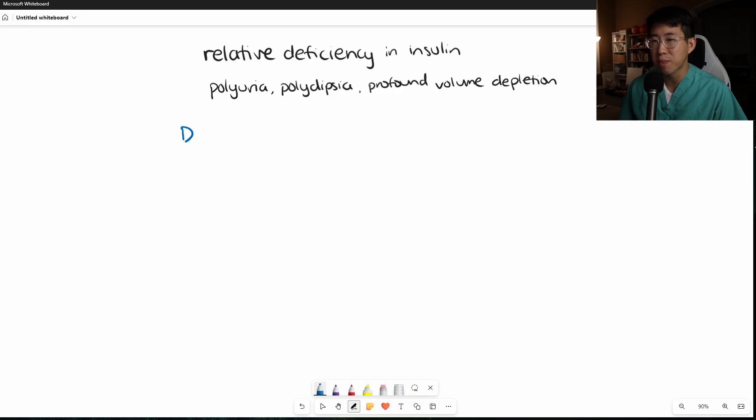Let's list out the biggest differences between DKA and HHS. First, DKA typically has a glucose less than 800, most of the time between 350 and 500. You may see glucose less than 250 in euglycemic DKA, and remember the biggest risk factor for euglycemic DKA is SGLT2 inhibitors. On the other hand, glucose in HHS is frequently above 1000.